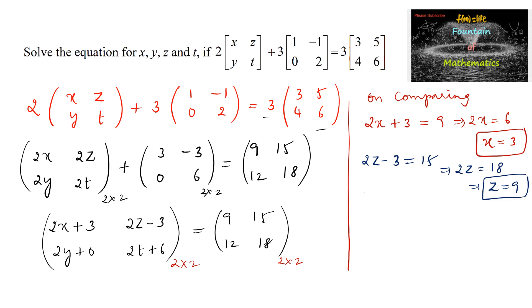Next, 2y plus 0, that is 2y is equal to 12. So y is equal to 12 upon 2, which is 6. We can write y is equal to 6.